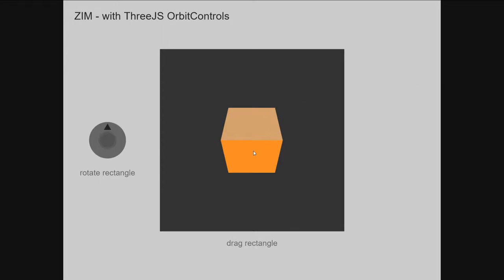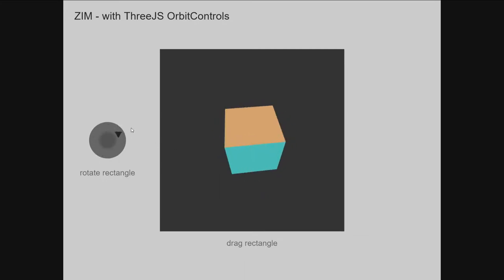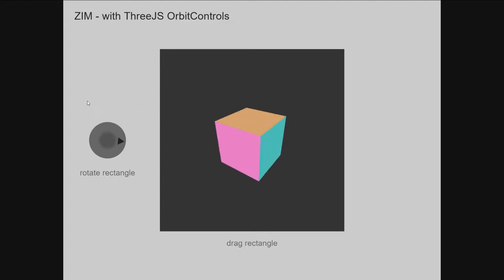Here is an example of how we've traditionally used the orbit controls with ZIM. This dark rectangle represents the Three.js world inside of a ZIM frame. We've turned the interactivity of that Three.js world to true with the parameter, and that allows us to use orbit controls anywhere inside this area, and then use ZIM controls outside that area to rotate it. You've got one or the other — you can't have ZIM controls behind here and still work, and you can't have Three.js controls here and work, so they're separated in space.